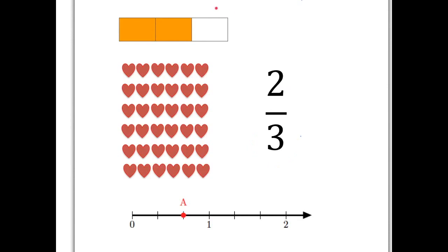So in this rectangle, we can see that, right? We have divided the rectangle into three pieces and we've taken two of them and colored them in.